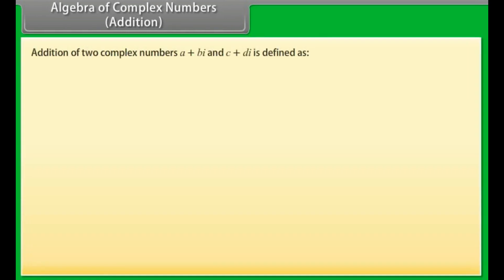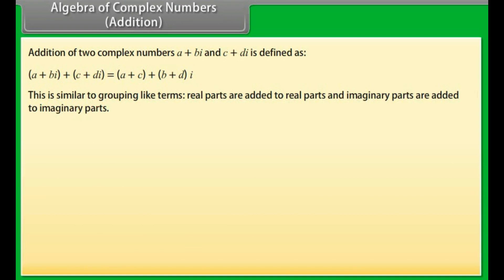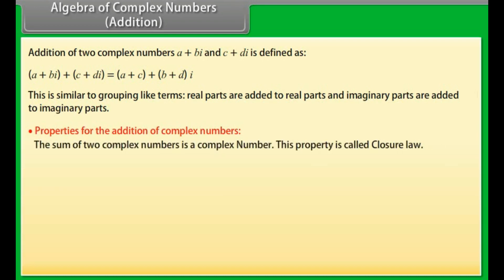Algebra of complex numbers — Addition. Addition of two complex numbers (A plus B iota) and (C plus D iota) is defined as: (A plus B iota) plus (C plus D iota) is equal to (A plus C) plus (B plus D) iota. This is similar to grouping like terms — real parts are added to real parts, and imaginary parts are added to imaginary parts.